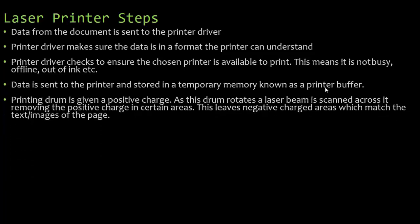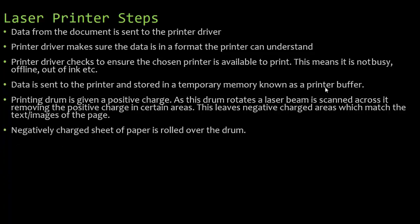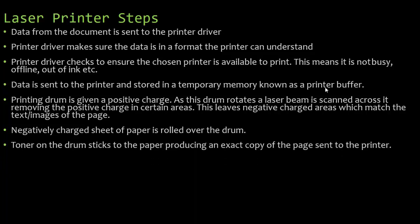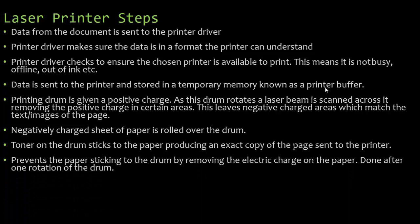The printing drum inside the laser printer is given a positive charge. As the drum rotates, a laser beam is scanned across it, removing the positive charge in certain areas, leaving negatively charged areas which match the text or images of the page being printed. The negatively charged sheet of paper is rolled over the drum, and the toner — the dry powder ink on the drum — sticks to the paper, producing an exact copy of the page sent to the printer. It prevents the paper sticking to the drum by removing the electric charge on the paper. After one rotation of the drum, this is done.